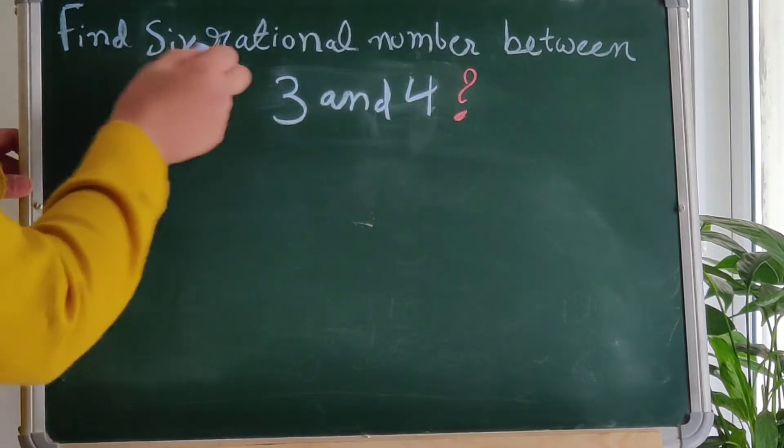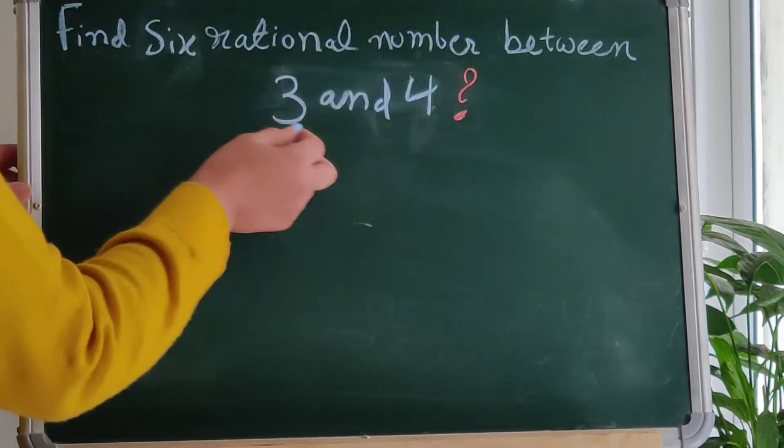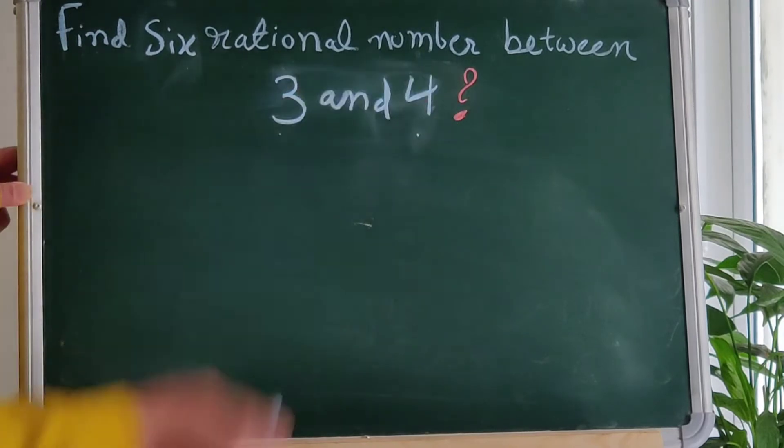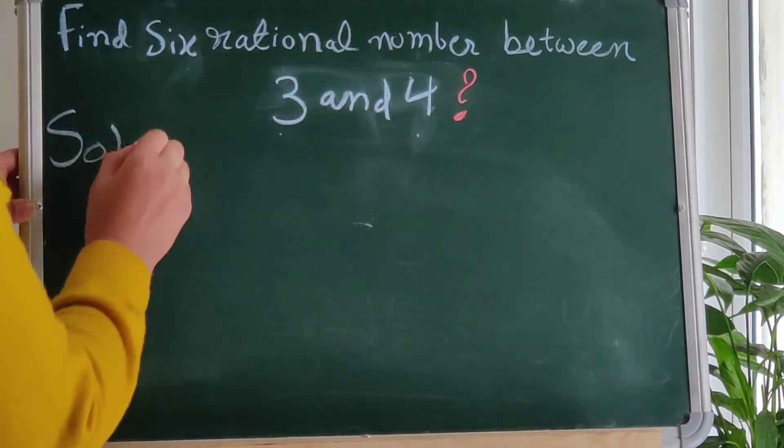So what is our question? Find 6 rational numbers between 3 and 4. So let's start with this.